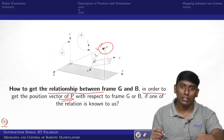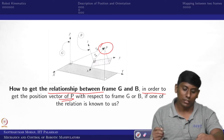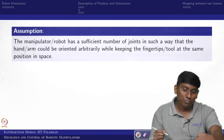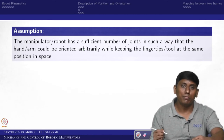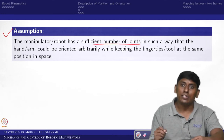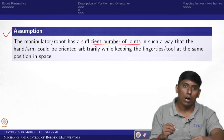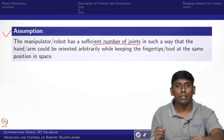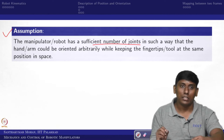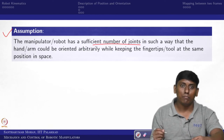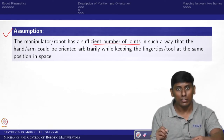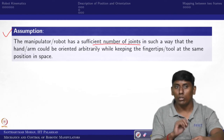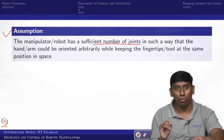As mentioned in the last lecture, we will be talking about description of position and orientation in this lecture. For that, we bring in the assumption that the manipulator or robot has a sufficient number of joints such that the hand or arm could be oriented arbitrarily while keeping the fingertip or tool at the same position in space. The robot constraints have not been incorporated in this description.